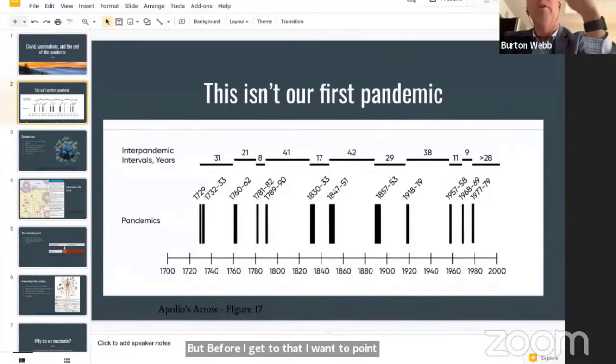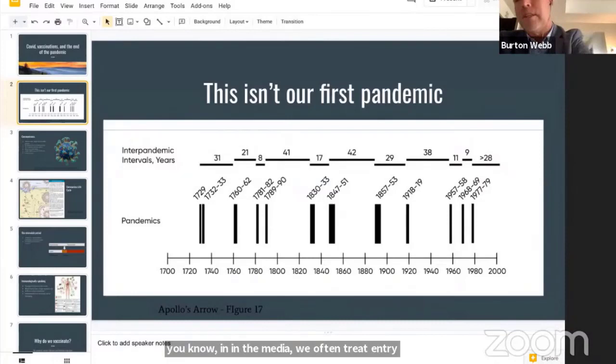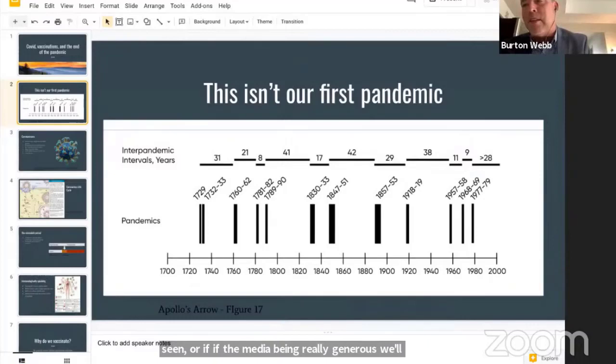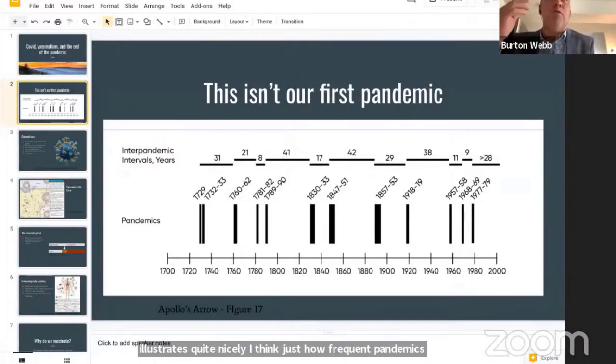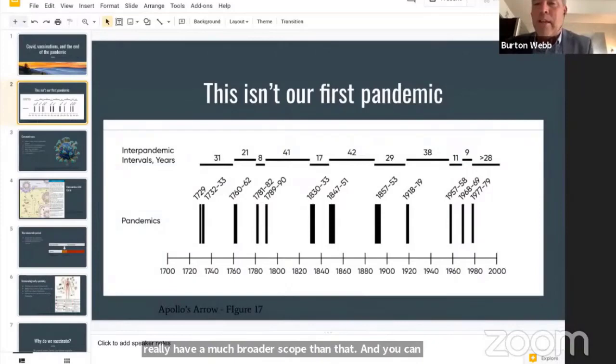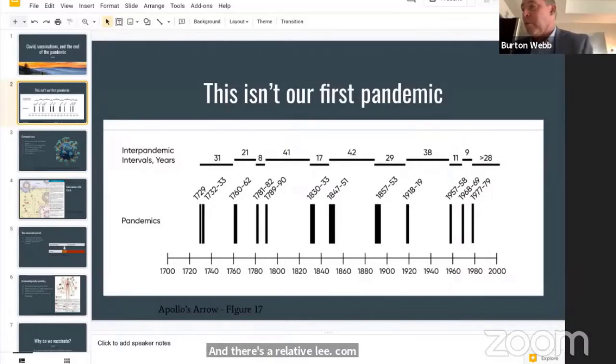But before I get to that, I want to point something out. In the media, we often treat emerging diseases as if this is the first pandemic we've ever seen. Or if the media is being really generous, they'll talk a little bit about the flu pandemic back in 1917, 1918. Really, I want to point out that these pandemics come along all the time. This is a figure lifted from a book that was published last year called Apollo's Arrow. It really illustrates quite nicely just how frequent pandemics are.